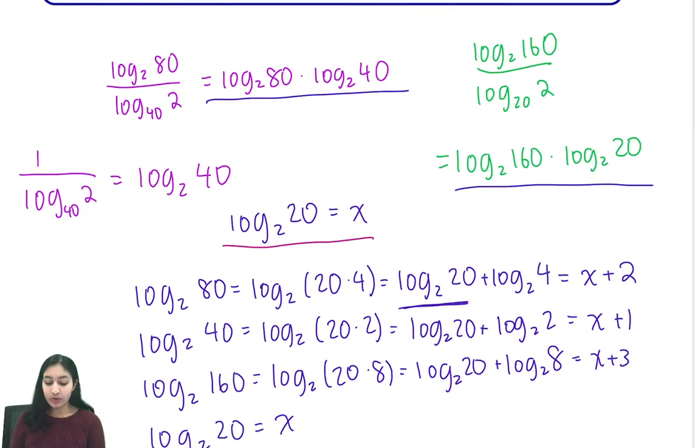So in this case, noting that 20 made all of our other multiplication parts powers of 2, so that they would be integers, made it really nice. So 20, we would just add 0.